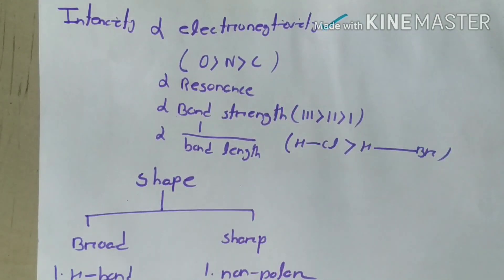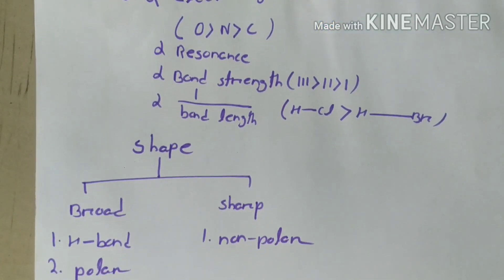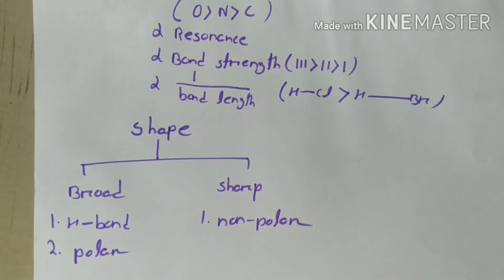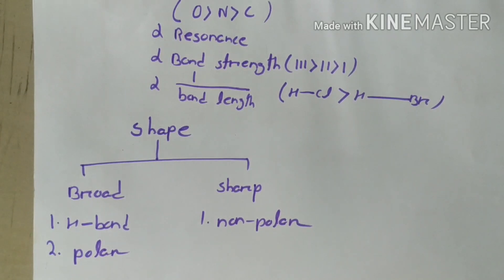It also depends on resonance. If the resonance is more, there will be double bond character. Bond strength also affects intensity—as bond strength increases, intensity increases.